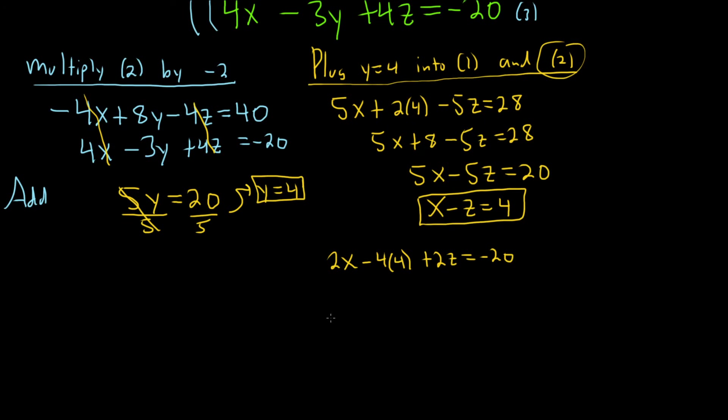That's going to be 2x minus 16 plus 2z equals negative 20. We can add the 16 so we get 2x plus 2z equals negative 4. Notice we can divide all of these by 2, so let's do it. x plus z equals negative 2. I'm going to put this in a box.